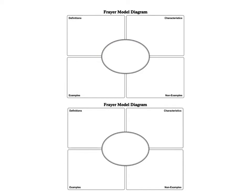We're going to complete two Frayer models. The first one will be titled rational numbers in the center circle, and the second one is irrational numbers.